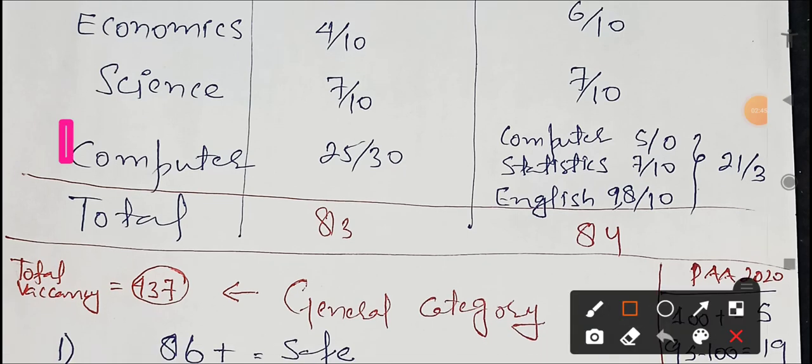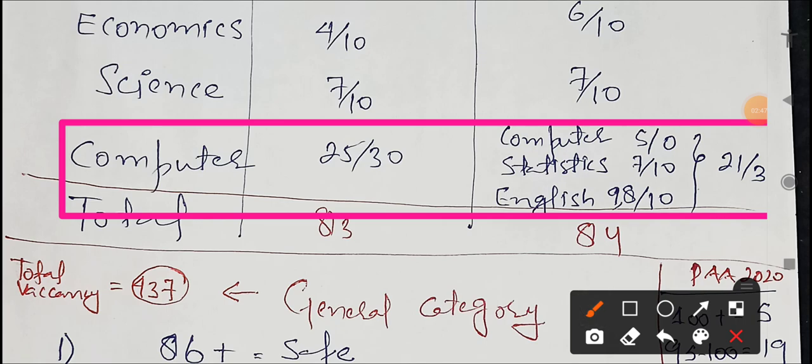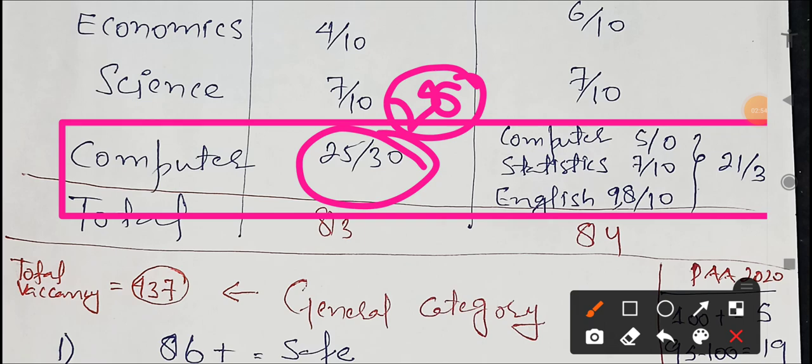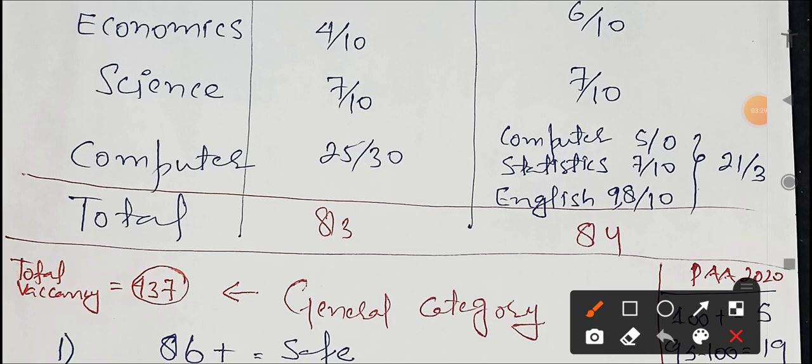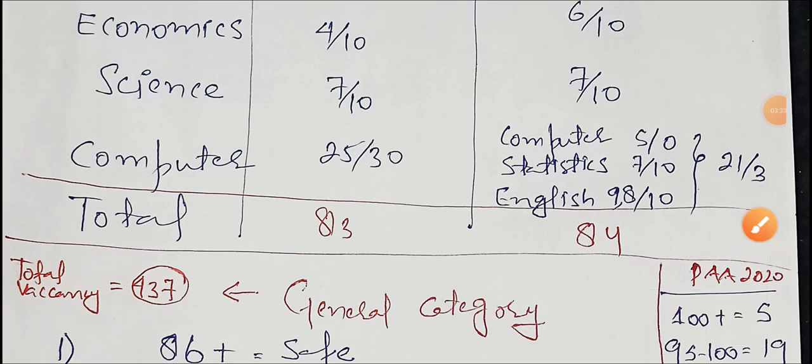For Computer section in Punjab Account exam, it was very easy, with students attempting 28-29 marks, but we'll consider 25 as average. In Finance Account exam, there are three portions: Computer, Statistics, and English with 10 marks each. Computer was moderate level so we took 5 average, Statistics was easy so 7 average, and English was also easy at 8-9 out of 10. So we assume 20 out of 30 for these three sections, making it 30 total.